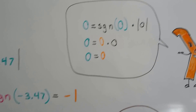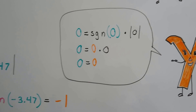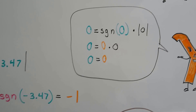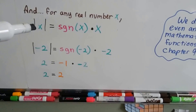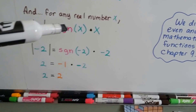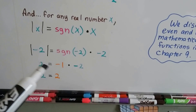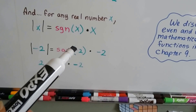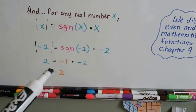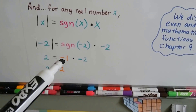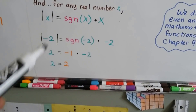Now look at what happens when x equals zero. If x is zero, then we have the sign function of zero times the absolute value of zero — that's zero. So our choices remain negative one, zero, or positive one. For any real number x, the absolute value of x equals the sign function of x times x. Plugging in negative 2: the absolute value of negative 2 is 2. The sign function of negative 2 is negative one (since negative 2 is less than zero), times negative 2 gives positive 2 — just like the absolute value.